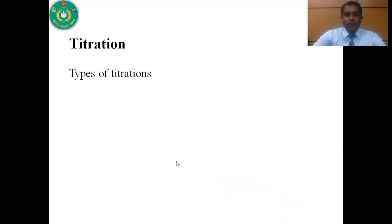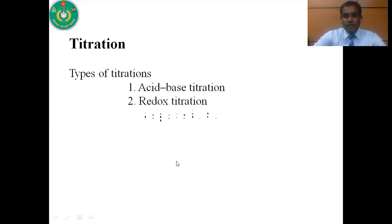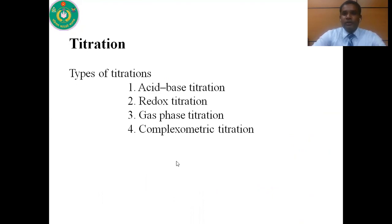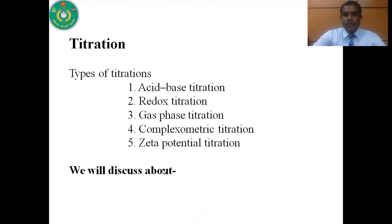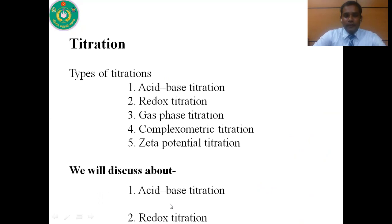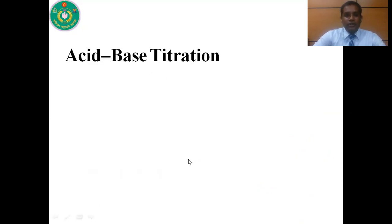So what are the types of titration? There are five kinds of titration: acid-base titration, redox titration, gas-based titration, complexometric titration, and potentiometric titration. We will discuss about acid-base titration and redox titration. So first, acid-base titration.